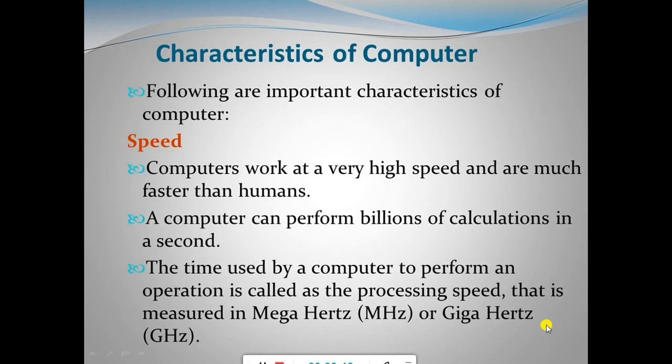The first most important characteristic is computer speed. Computers work at a very high speed and are much faster than humans. If a bigger calculation is given to a human being, they will take a longer time than a computer. A computer can perform billions of calculations in a second, whereas human beings take a lot of time to do it. By this characteristic we can tell that computers are much faster than human beings.